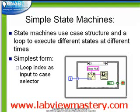In this section, we discuss the simplest of the state machine architectures. We simply have a case structure inside a while loop, where the loop index is the input to the case selector. Each time through the while loop, a different case will run.